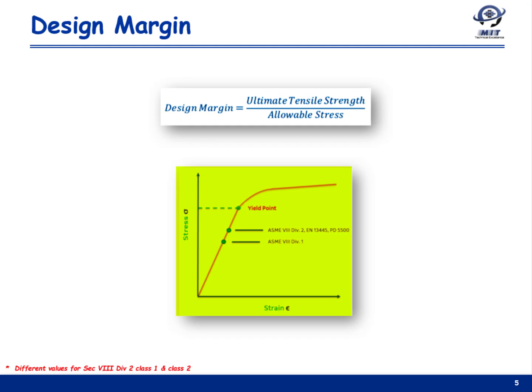The graph shown here, which plots yield and allowable stress for various codes, is indicative only. It signifies that ASME Section 8 Division 1 has a lower allowable stress compared to other codes such as Division 2, EN, and PD codes, and is therefore more conservative than them.